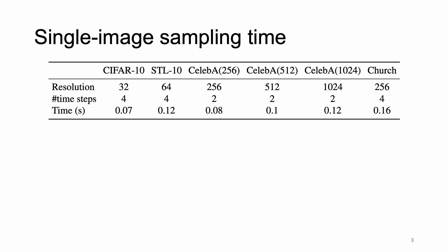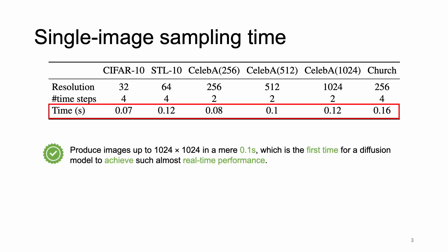To showcase the efficacy of our approach, we evaluated the time required for sampling a single image on various datasets. According to the table, our method can produce images up to 1024×1024 in a mere 0.1 second with just two to four steps, a near real-time performance for a diffusion model, which is pretty impressive.